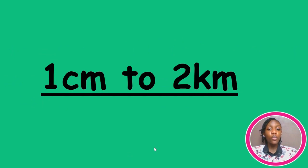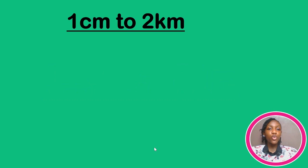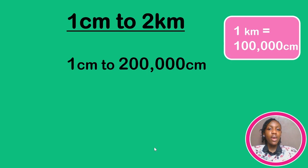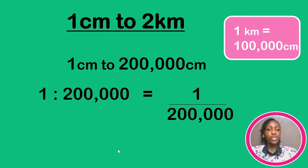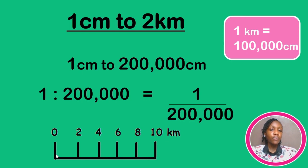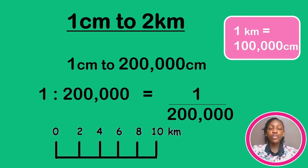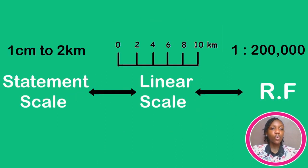Next example: one centimeter to two kilometers. Remember, one kilometer is 100,000 centimeters, so two kilometers is 200,000 centimeters. Writing as a fraction then ratio form: one over 200,000, or 1:200,000. Since it's one centimeter to two kilometers, the interval in the linear graph is still one centimeter, but the numbers move in multiples of two. Summary: statement scale one centimeter to two kilometers, linear scale with one centimeter spacing but intervals of two, and representative fraction 1:200,000.